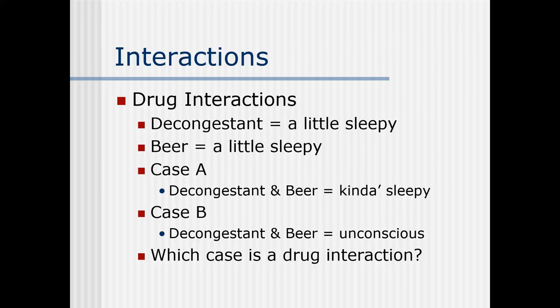A lot of students have a hard time conceptually understanding interactions, but you intuitively already know what one is — you know what a drug interaction is. For example, if I take a decongestant, I get a little sleepy. If I drink a beer, I get a little sleepy. Case A: I take a decongestant, wash it down with a beer, and get kind of sleepy. Case B: I take a decongestant, wash it down with a beer, and fall into a coma. Which is a drug interaction? Intuitively, case B — drug interactions are these surprising, bad things when two drugs combine in an unusual, weird way. And that's exactly what I've been talking about with these statistical interactions.